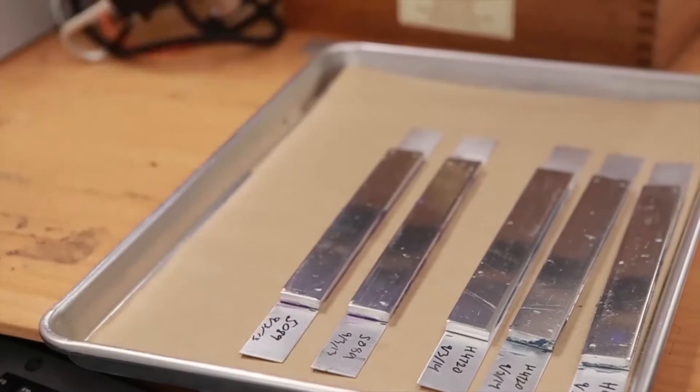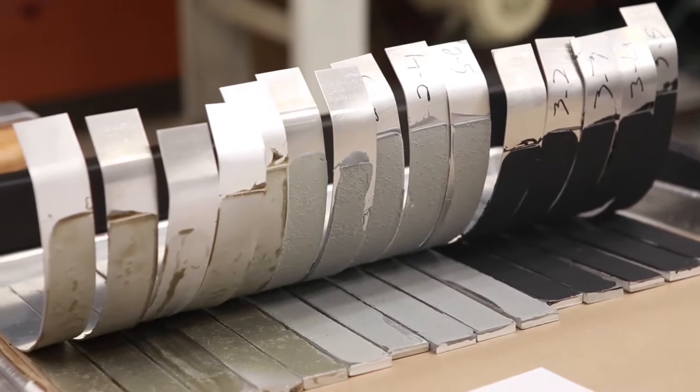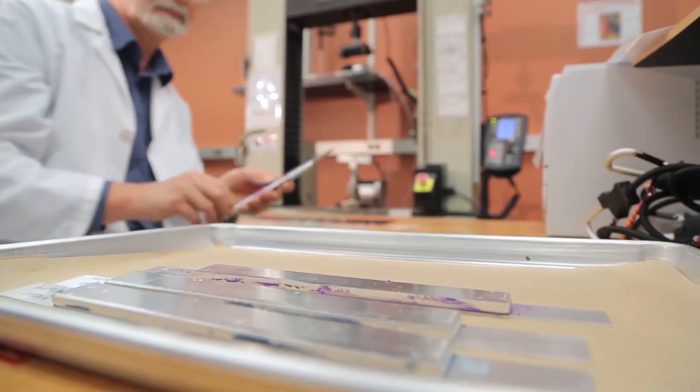These tests are important for describing assemblies where the bond is subjected to peel loads. All of the applied load is concentrated on the leading edge of the adhesive rather than across the entire bonded area.